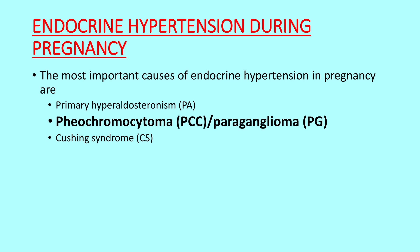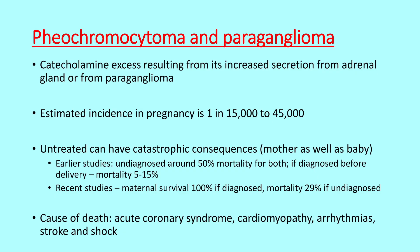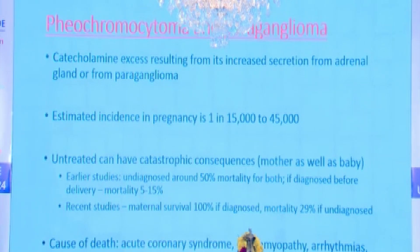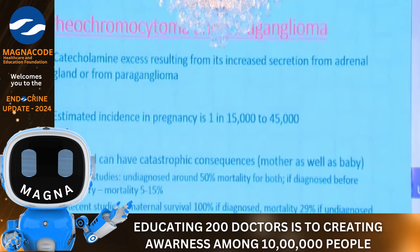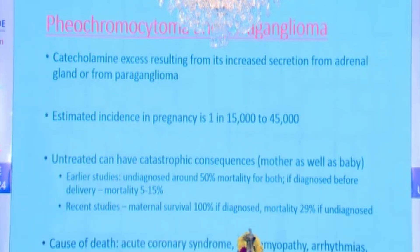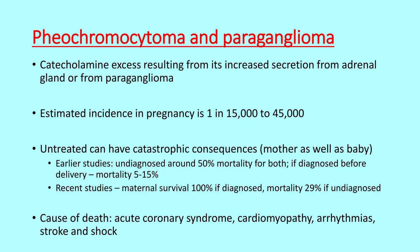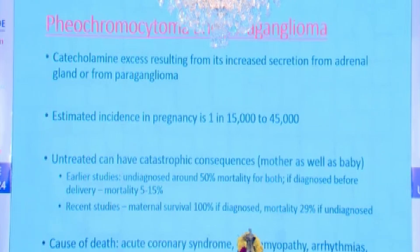Coming to the second entity — pheochromocytoma or paraganglionoma. It is a condition of the catecholamine axis resulting from increased secretion from adrenal glands or from paraganglia. Estimated incidence is about 1 in 15,000 to 45,000 pregnancies. Untreated, it can have catastrophic consequences for mother and baby. Earlier studies showed mortality as high as 50% for both. If diagnosed before delivery with good blood pressure control, mortality used to remain around 5-15%. Recent studies have shown that maternal survival has increased to about 100%, so it can be well managed if diagnosed. Causes of death in pregnancy due to pheochromocytoma include acute coronary syndrome, cardiomyopathies, arrhythmias, stroke, and shock.